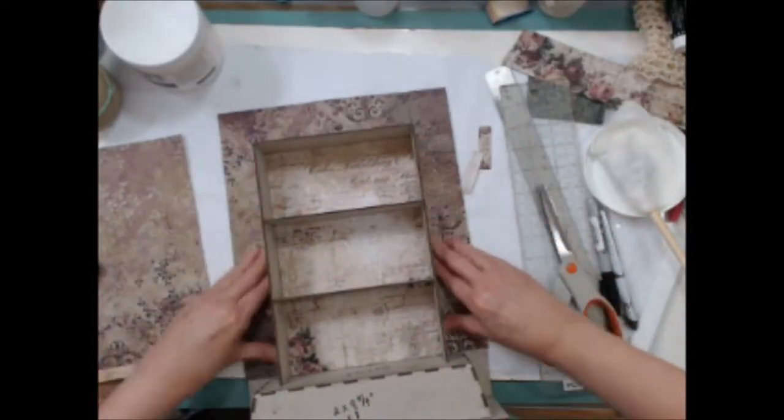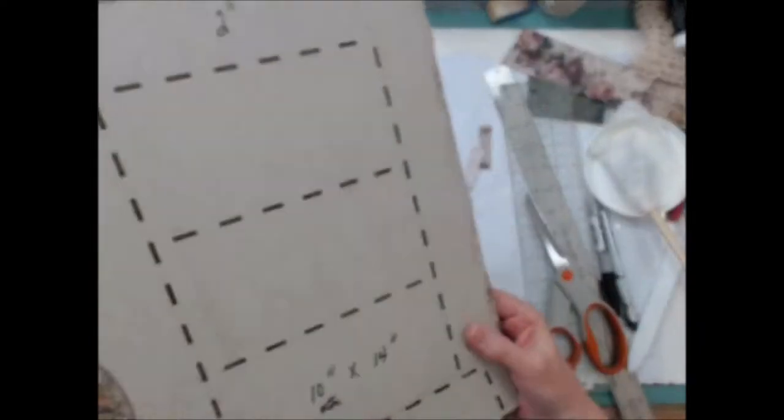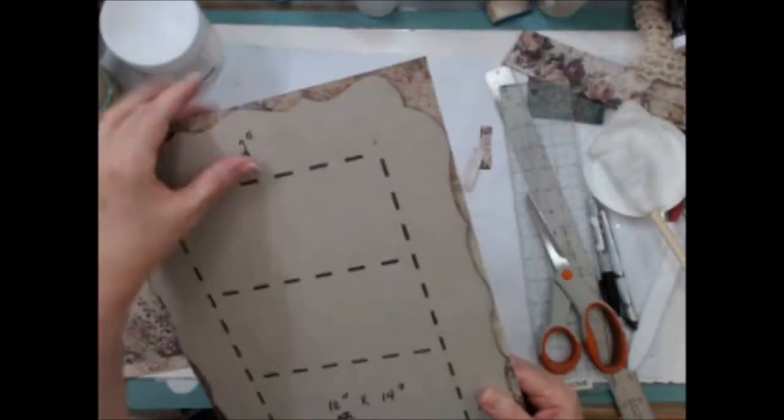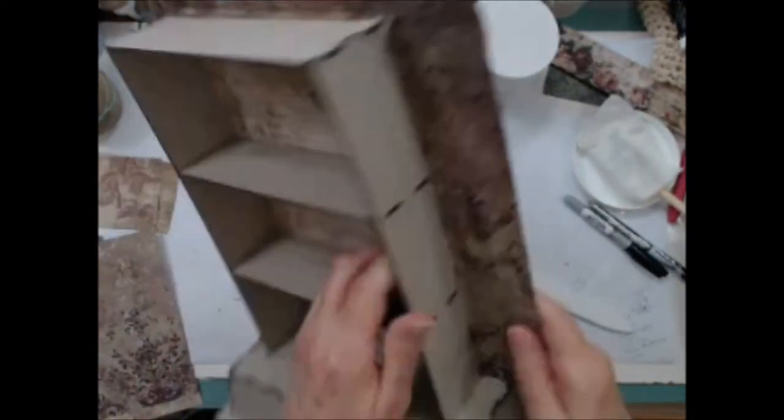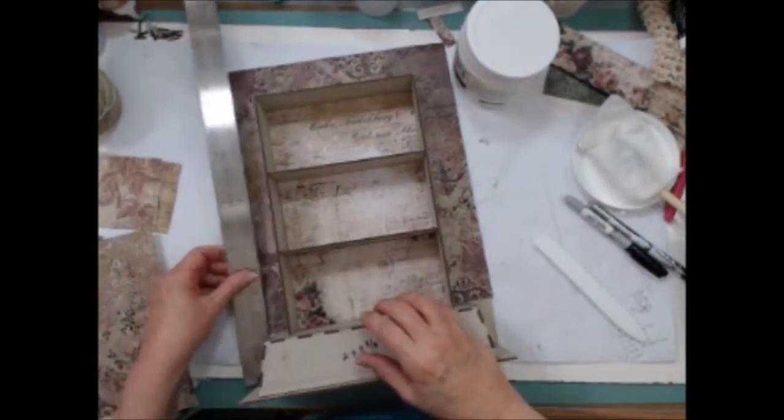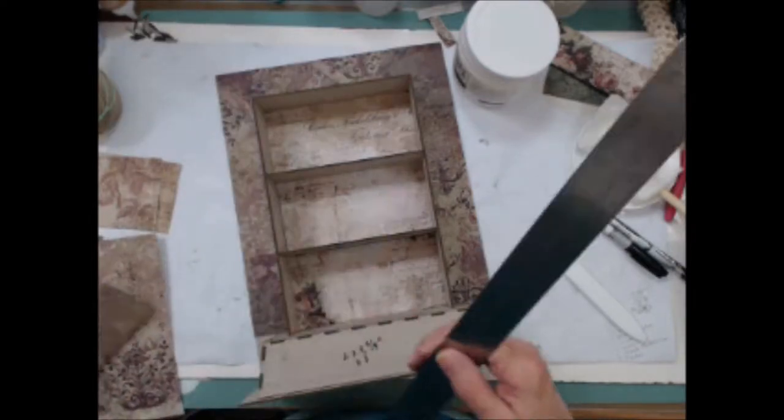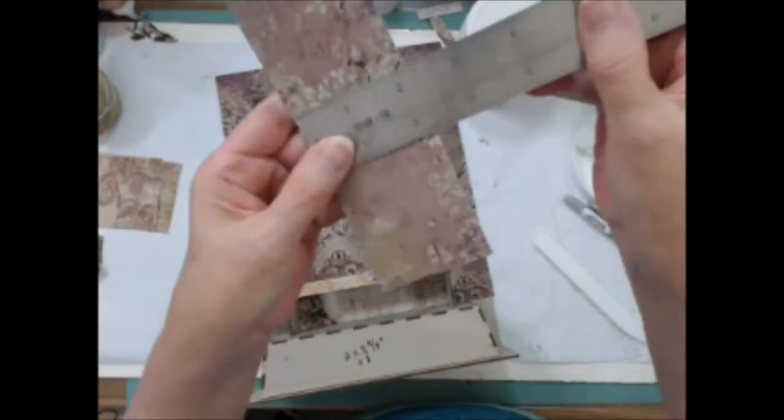On the back you can see the excess paper which will need to be trimmed off and sanded for a nice finished look. Here it is all glued down and you can see how that extra quarter inch of paper has covered that inside corner which will give a more finished look in the end.